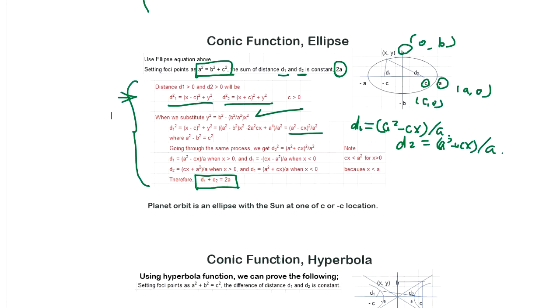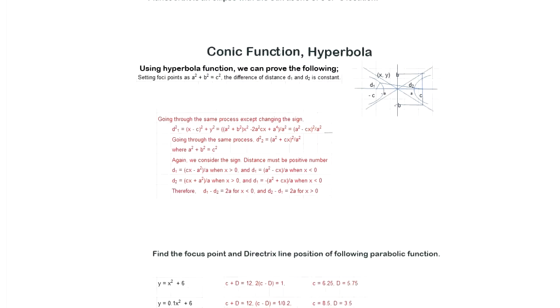And this is a proof of this famous relationship between distances d1 and d2 - the sum of the distances is the same. Conic function hyperbola: hyperbola is slightly different. a² + b² = c². Setting the focus point defined as this, the difference between d1 and d2 is constant.